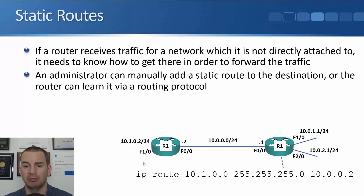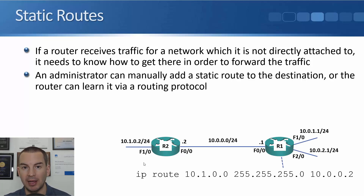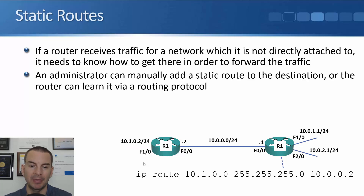The command to add a static route is IP route. Let's look at R1's route to get to the 10.1.0 network first. The command that I need to add is IP route 10.1.0.0 255.255.255.0 — the subnet I need to get to including its subnet mask. Then I specify the next-hop IP address that I need to send traffic to in order to get there. For R1 to send traffic to the 10.1.0 network, it needs to send it out of its FastEthernet 0/0 interface and send it to 10.0.0.2 on router R2.